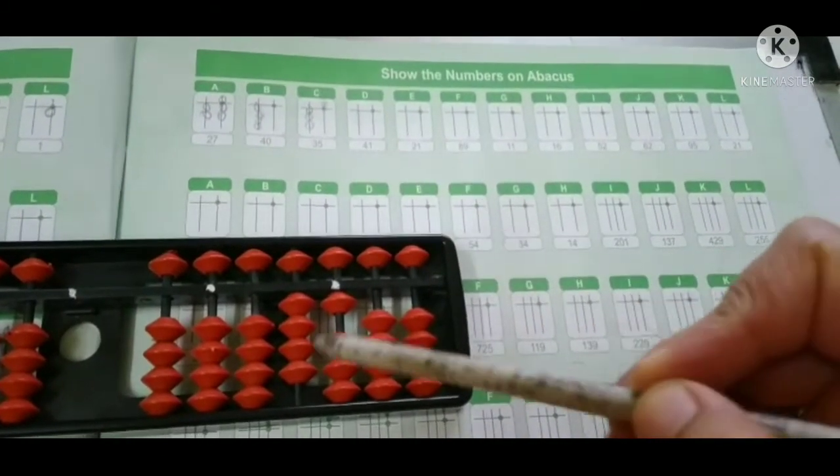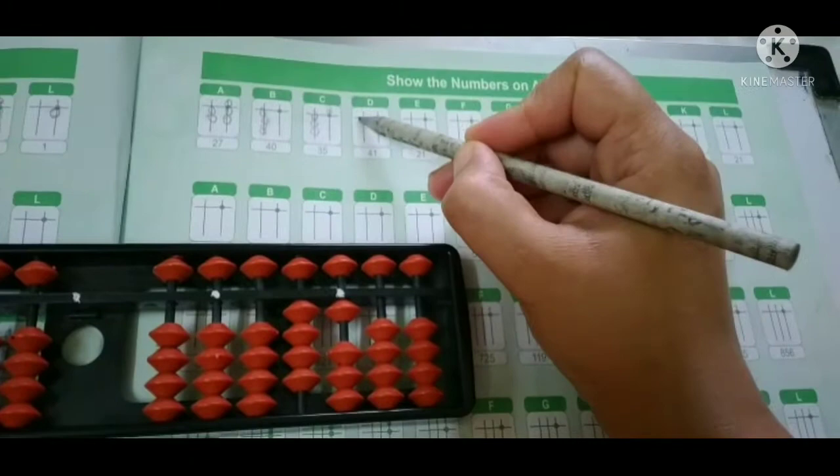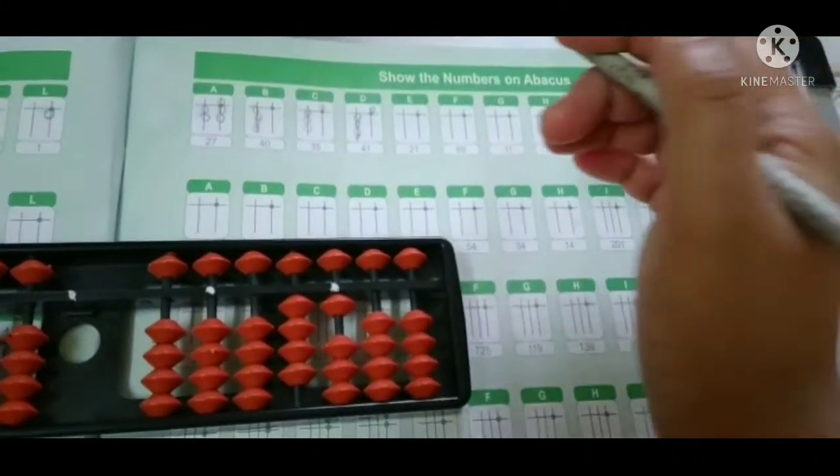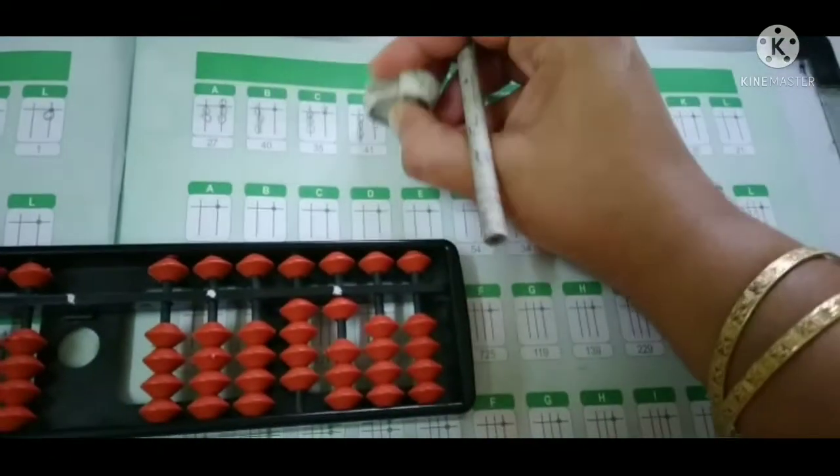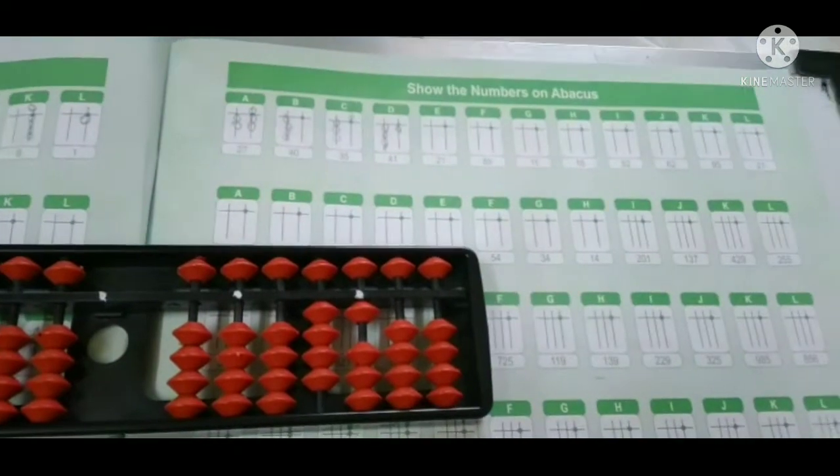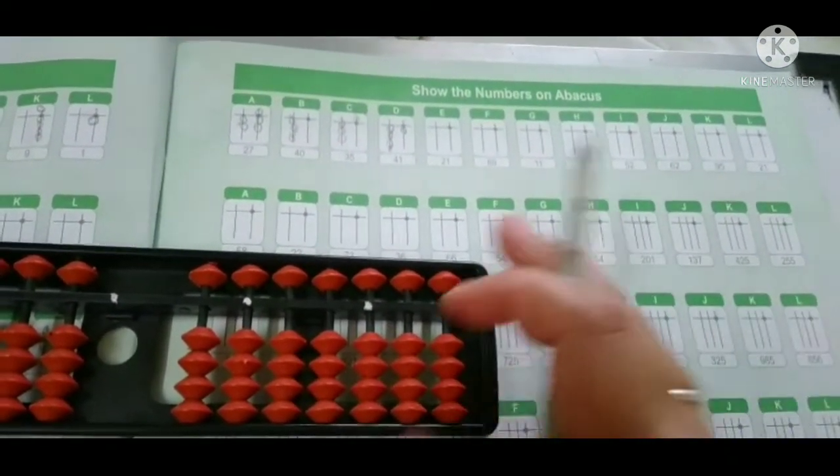Now I'm showing you with a pencil because I have to write here also. So 41: 1, okay. Oh sorry, 1 here, 1 down, fine.